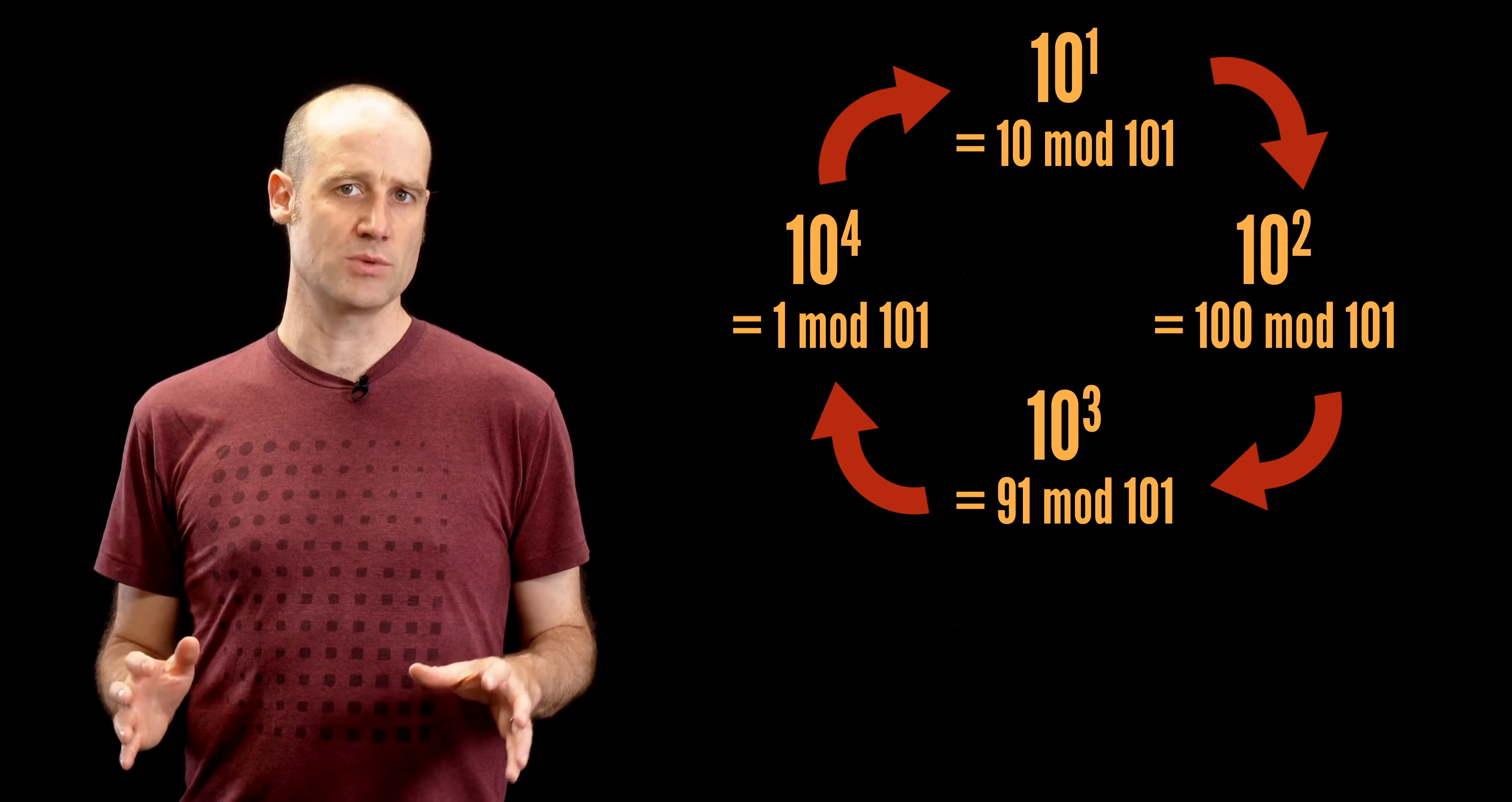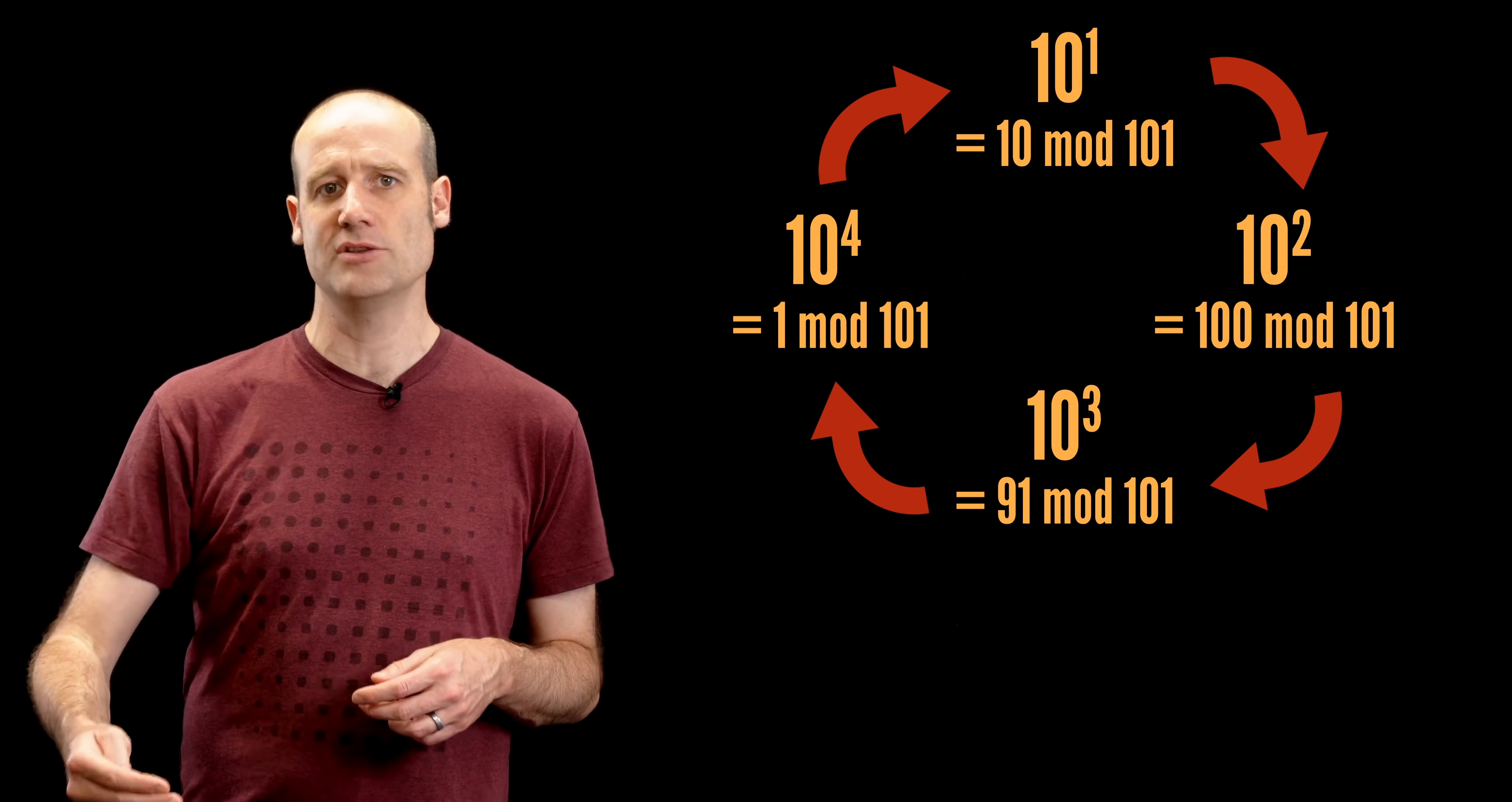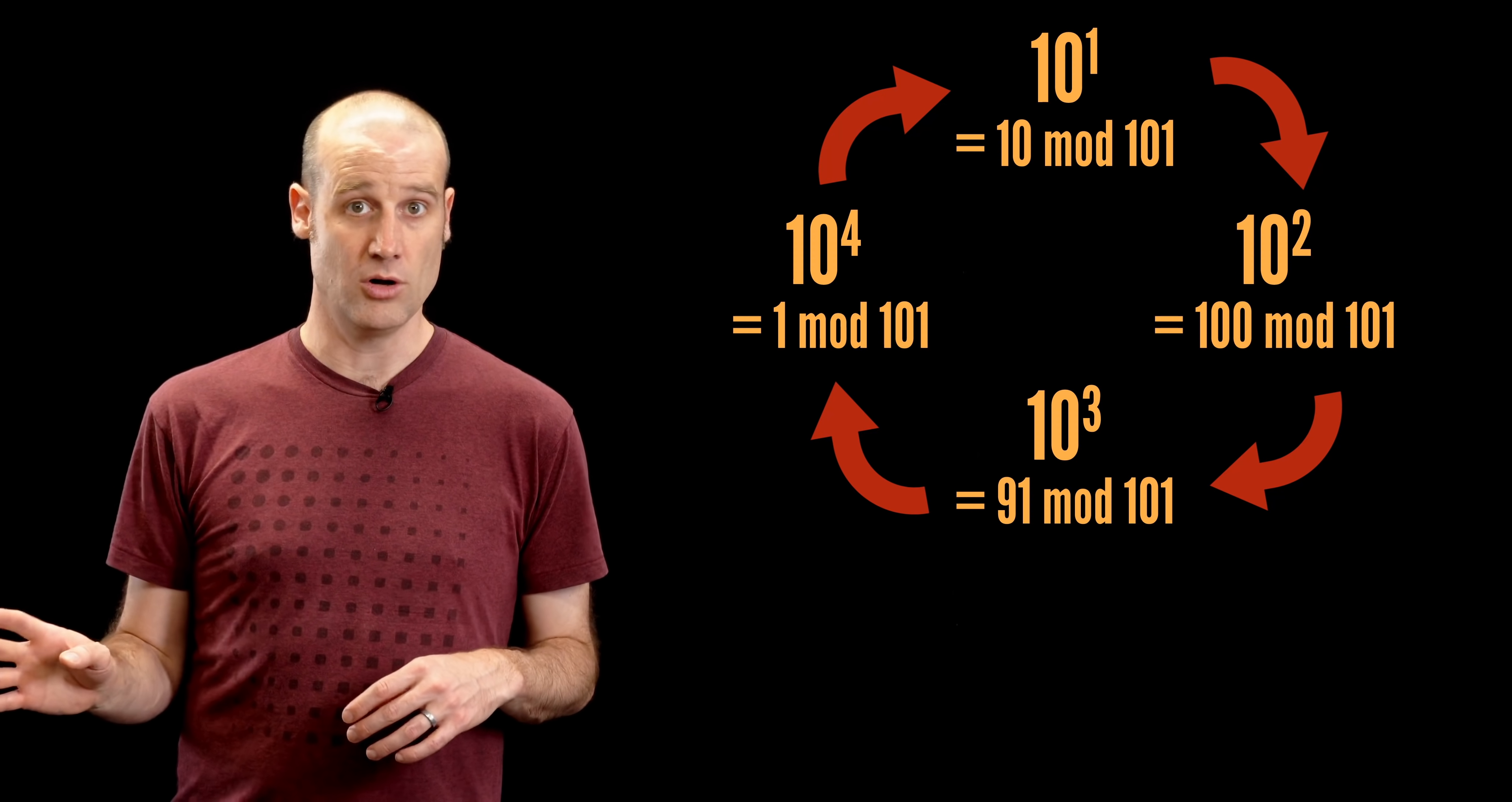And every time you do this with powers of 10, for any prime that you're finding the remainder for, you're going to get a cycle. Because there's only a finite number of values you can have as the remainder, and sooner or later you're going to have the same one twice. Something something pigeonhole theory.